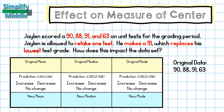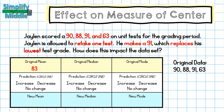For mean, I'm going to be adding together all the data points: 90 plus 88 plus 91 plus 63, and I end up with 332. Then I divide that by 4, so for my mean I end up with 83.